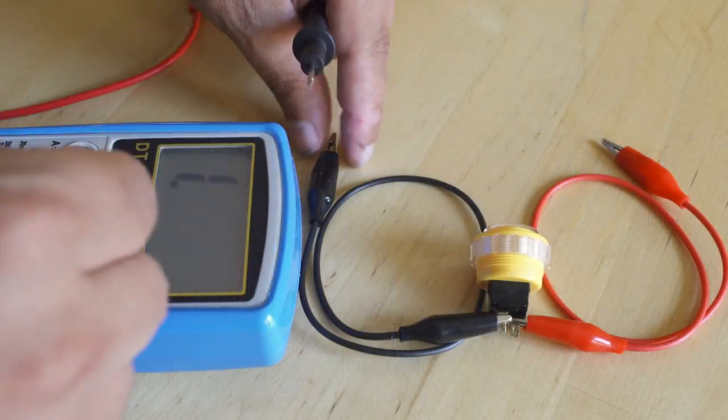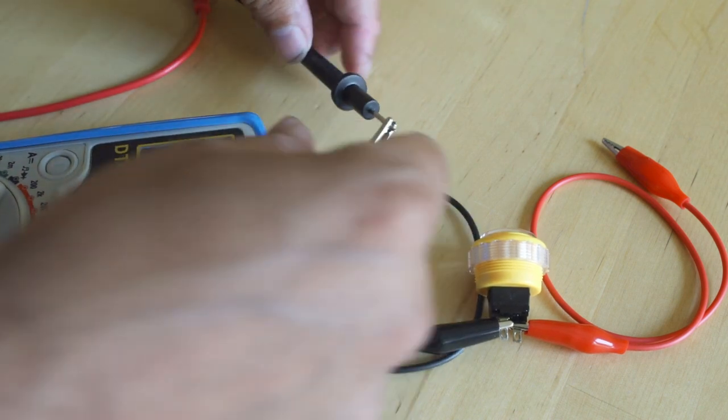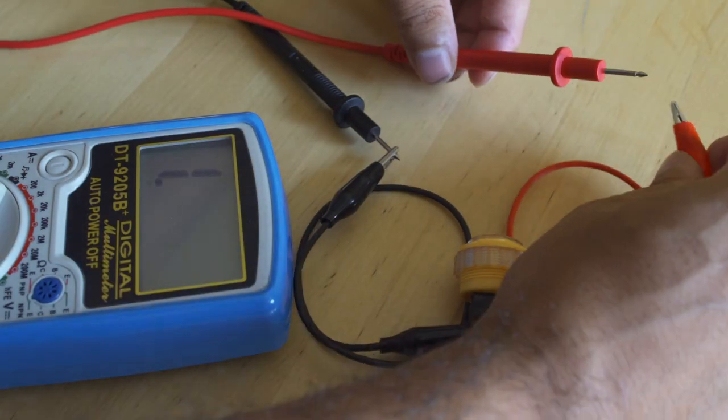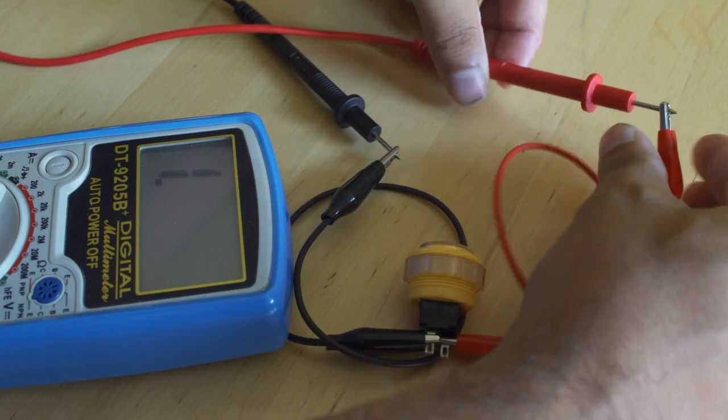So what we'll do is we'll take the black probe and we'll put it in the black alligator clip just like this. Just make sure you get those teeth to bite on because it can slip out. And then we're going to go ahead and take the red probe and we're going to put that in just like we did the black probe. And you will see we have no continuity. Everything is listed as one point.